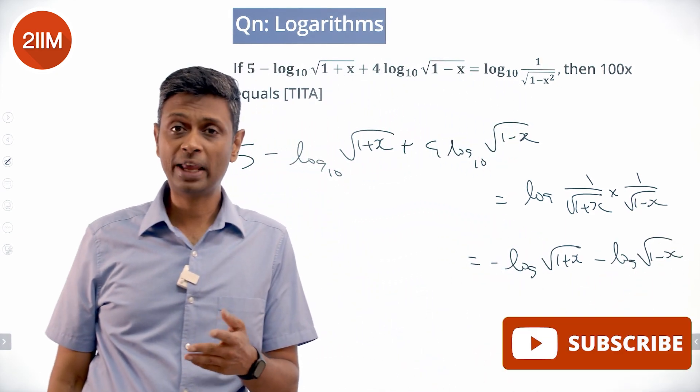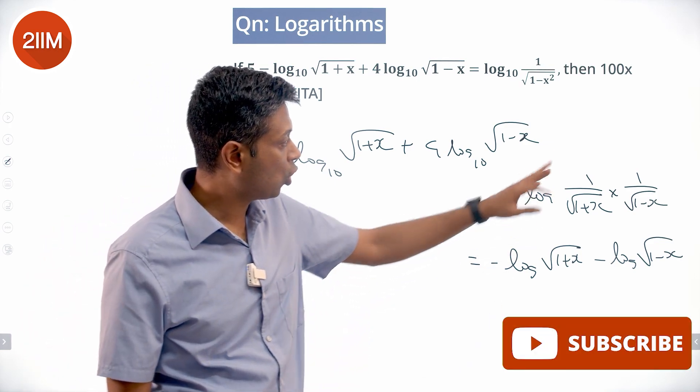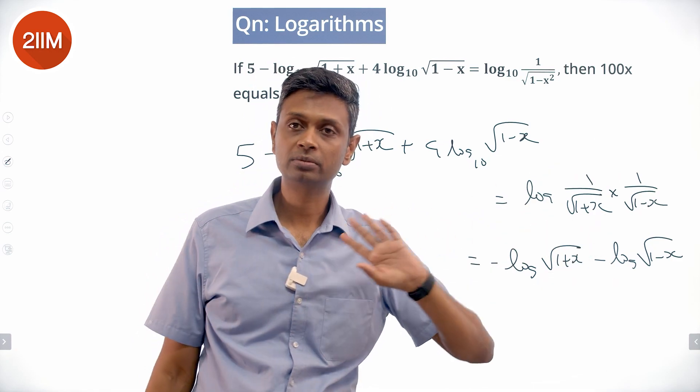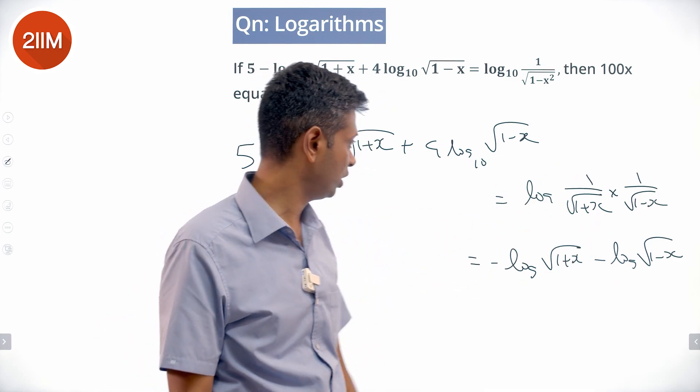Log a b is log a plus log b. Log of 1 by a is minus log a. Log of 1 by b is minus log b. 1 by b is b power minus 1. This is the idea we are using here.